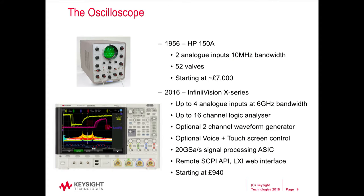The equipment we're going to use today is the oscilloscope, which goes back to 1934. Originally it was an analogue-to-analogue device. At the time, you could buy two analogue inputs at 10 MHz for the index-adjusted equivalent of £7,000, and it had 52 valves. In a modern scope like the one shown, we can have up to four analogue inputs running at about 6 GHz — some scopes run up to 63 GHz. It has a 16-channel logic analyzer, a waveform generator, voice control, a touch screen, and signal processing running at about 20 giga-samples per second with a custom ASIC. We can control it remotely, and it starts at £940 — a lot more bang for your buck.